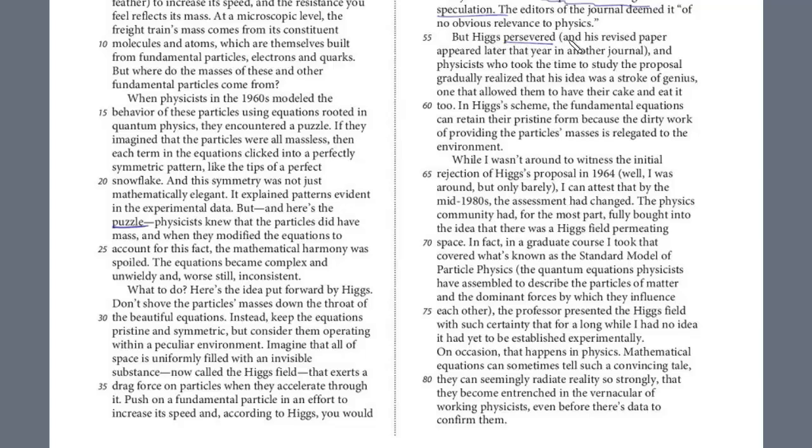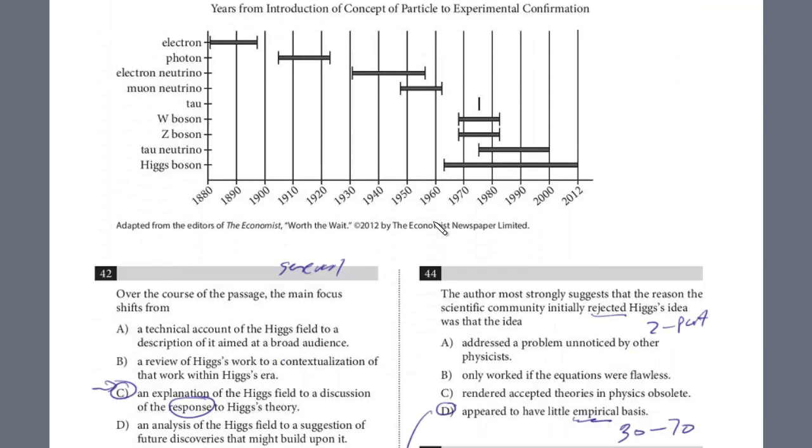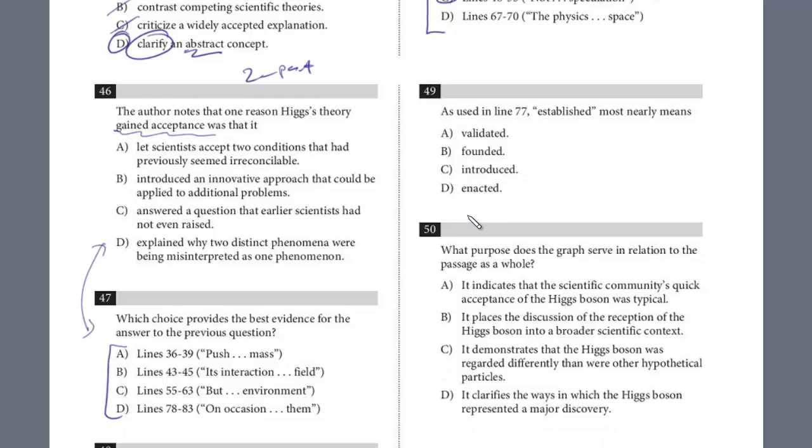All right. So look at 55, but Higgs persevered. So that's after the rejection. And his revised paper appeared later that year in another journal. And physicists who took the time to study the proposal gradually realized that his idea was a stroke of genius, one that allowed them to have their cake and eat it too. In Higgs's scheme, the fundamental equations can retain their pristine form because the dirty work of providing the particles masses is relegated to the environment. Remember, we referenced earlier about this puzzle where it didn't really fit together. And now they're using an expression. So we know here he persevered. And this is when gradually they accepted it because they realized it was a stroke of genius. And they use this sort of vernacular phrase have cake and eat it too. And you should recognize that also kind of relates to that puzzle because those two ideas really didn't fit together with the particles and the equations.